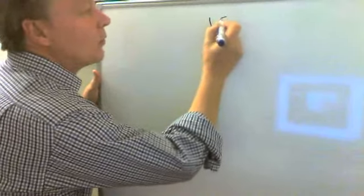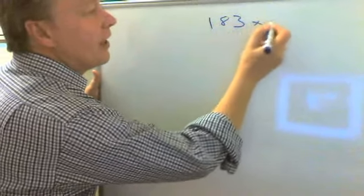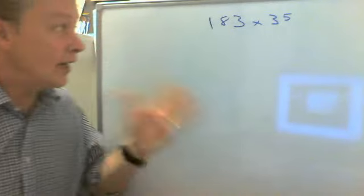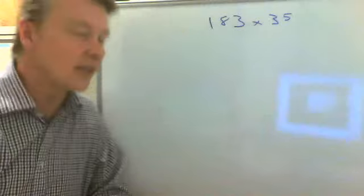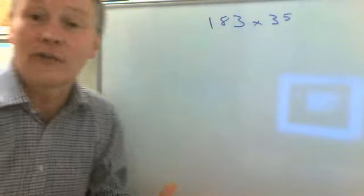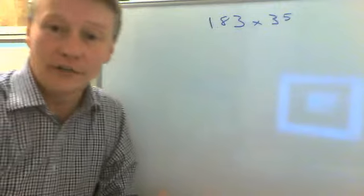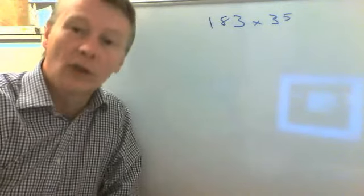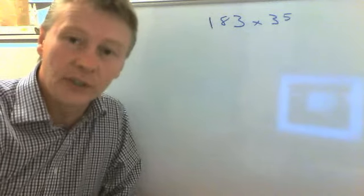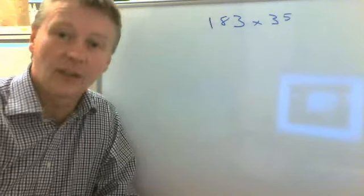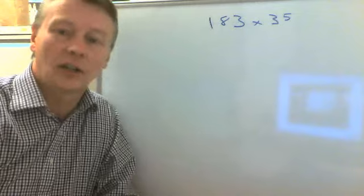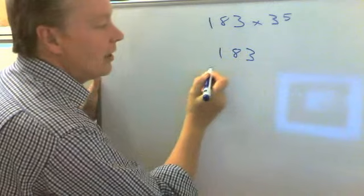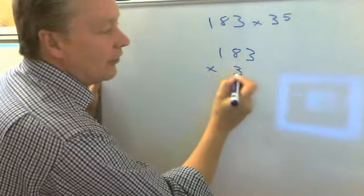So let's say we had a sum which was 183 multiplied by 35. Now the way to do that is to recognize that the 3 and the 5 are both units, the 8 and the 3 are both tens, and the 1 is 100, and we write that in a column in much the same way that we did the short multiplication, column addition, and column subtraction. So we write that as 183 multiplied by 35.